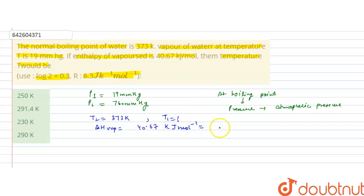So in Joule per mole, it will equal 40.67 into 10 raised to the power 3 Joule per mole. So now using the Clausius-Clapeyron equation.